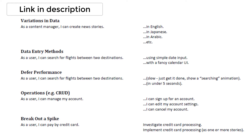You can split by data entry methods — how information is input into the system. You can split by performance: one option where you don't worry about performance at all, and another where you care deeply about it. You can split by operations: creating an account, editing, cancelling, etc. And finally you can split by investigation — also referred to as a spike. Those are the common patterns; now let's see how we apply them to our own example.